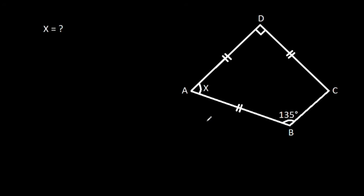In this video, we have been given that AB is equal to AD is equal to CD, and angle ABC is 135 degrees, angle ADC is 90 degrees, and angle BAD is X. We have to find X.